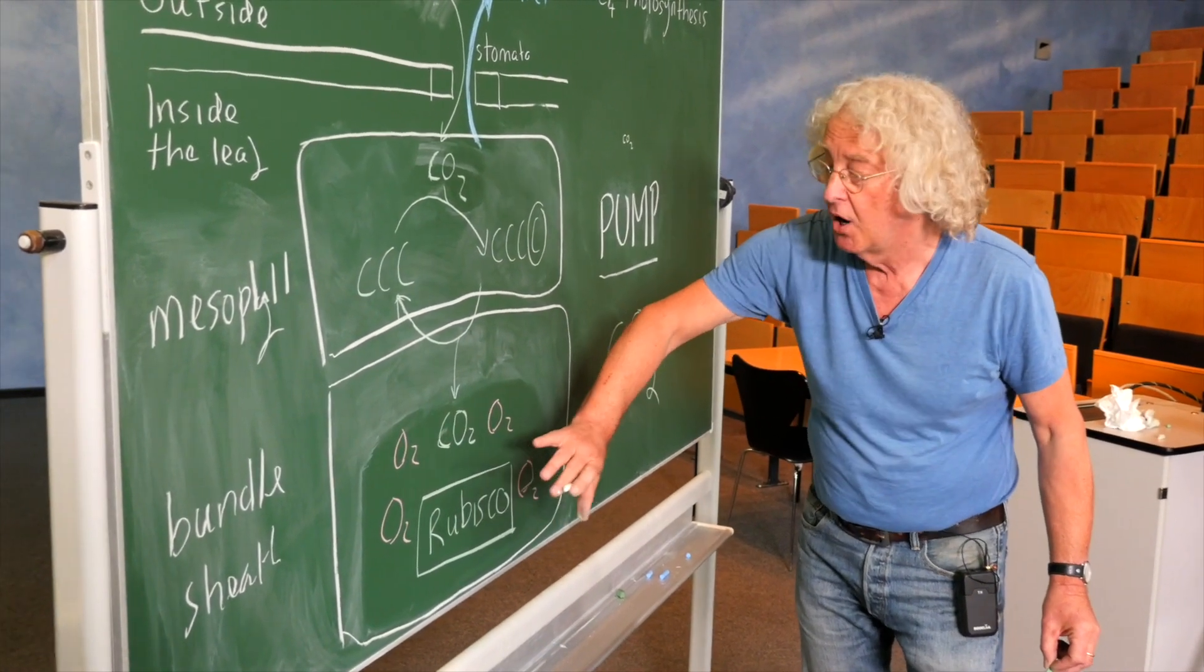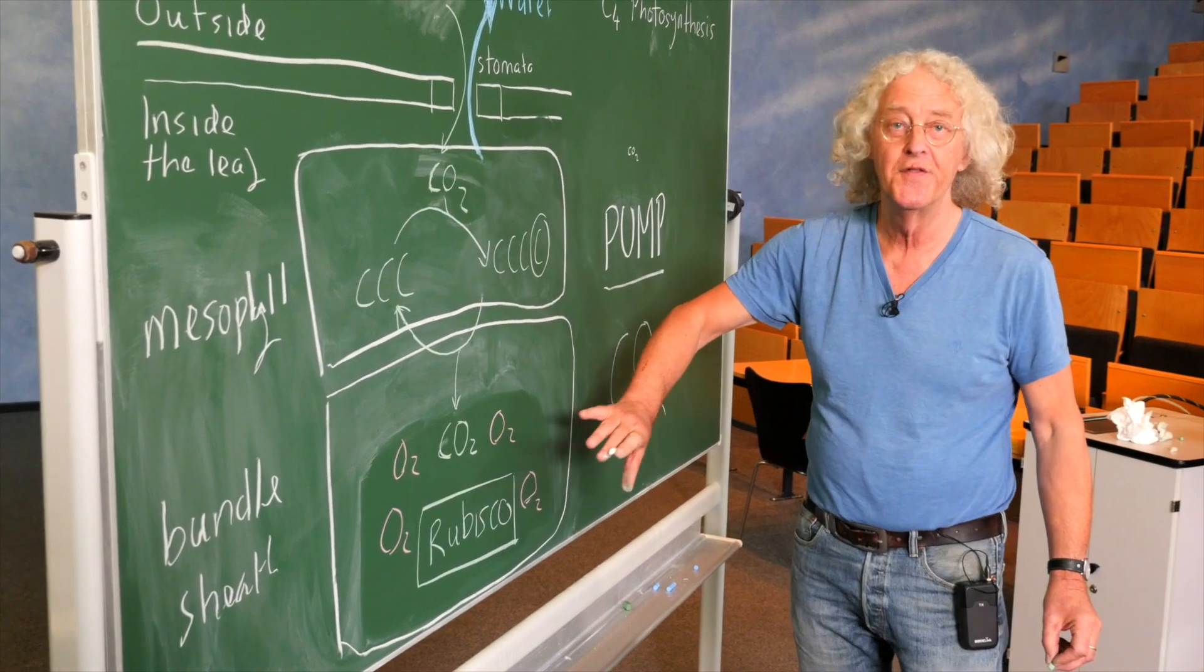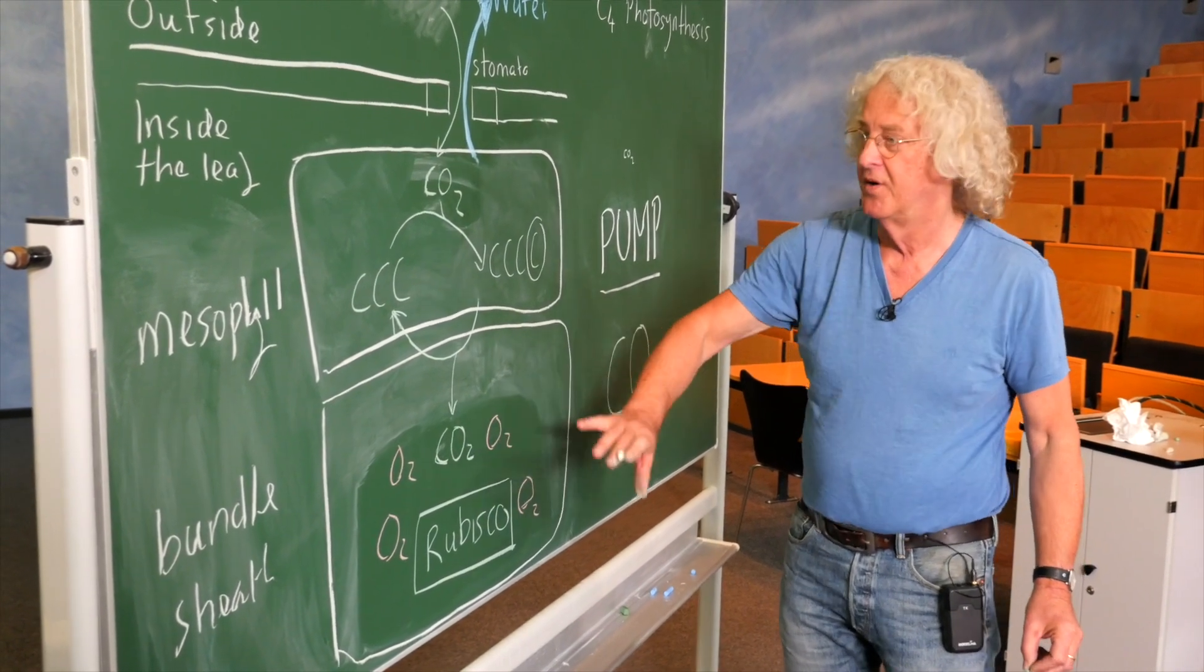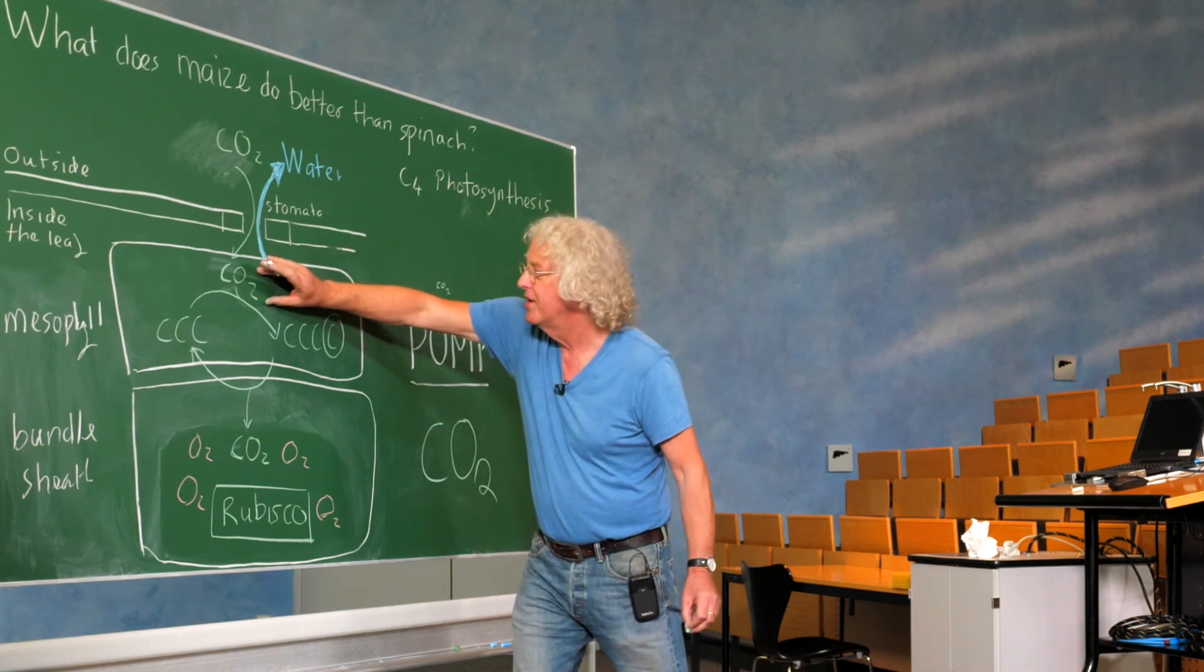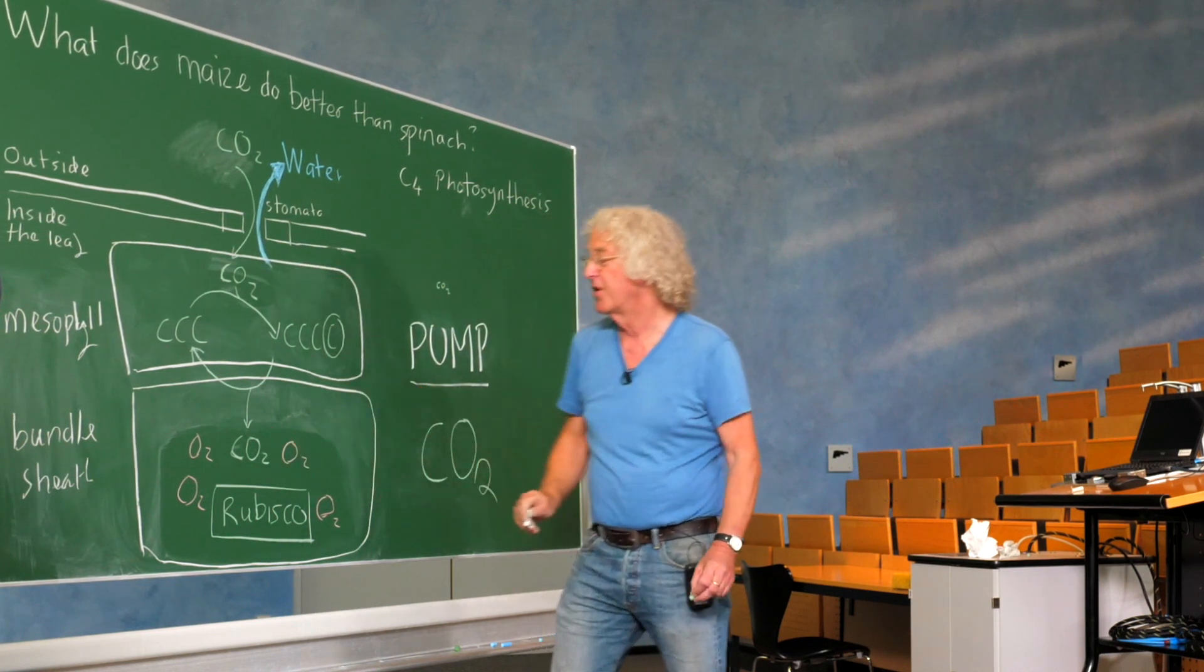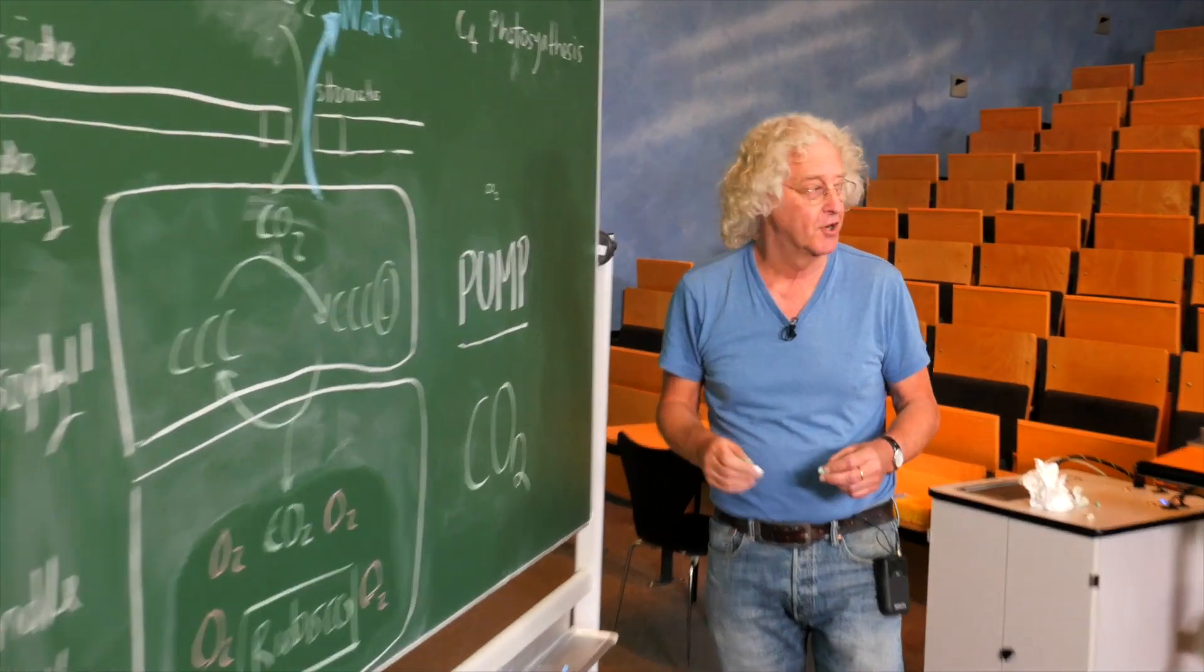And this is where Rubisco and almost all of the photosynthesis takes place. So in this way, we pull the carbon dioxide down close to the stomata, and we have high carbon dioxide around Rubisco. Now this sounds complicated, but it really works. It's called C4 photosynthesis.